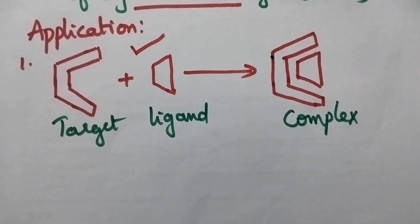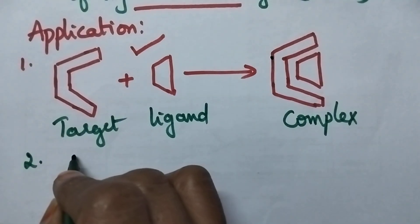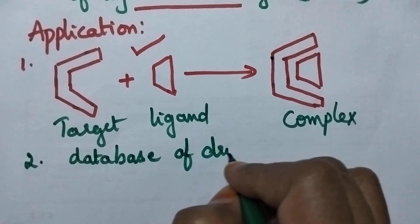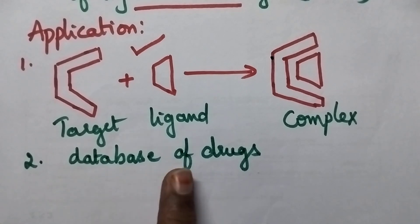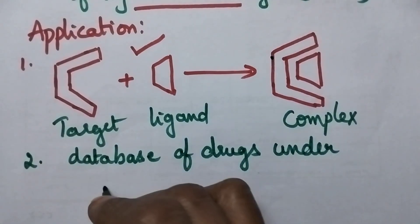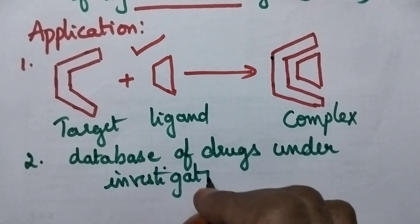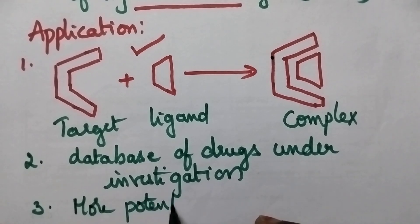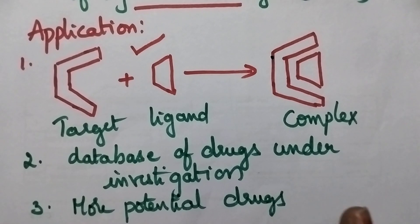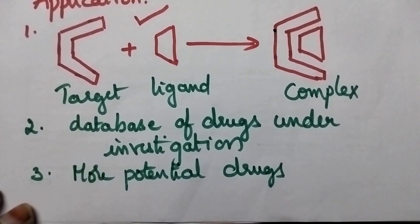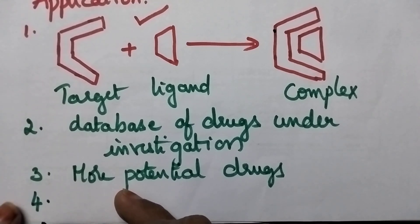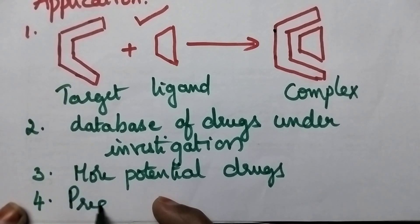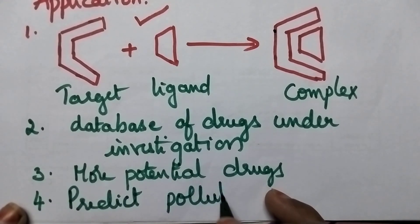At the same time, docking studies will provide a database of a drug under investigation. It is also possible to design more potential drugs, since along with the structure it is possible to study the reactivity and energy flow of the ligands. Finally, because of the target-ligand interactions, it is also possible to predict the pollutants which can be degraded by enzymes.